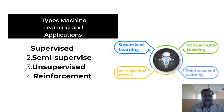There are basically three types of machine learning: supervised, unsupervised, and reinforcement learning. Some also add a fourth type: semi-supervised learning.